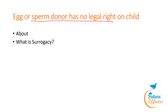Surrogacy is an arrangement where a woman agrees to carry and give birth to a child on behalf of another person or couple. A gestational carrier conceives, carries and gives birth to the child for another person or couple. Altruistic surrogacy involves no monetary compensation to the surrogate mother other than medical expenses and insurance during pregnancy. Commercial surrogacy includes procedures undertaken for monetary benefits or rewards in cash or kind, exceeding basic medical expenses and insurance coverage.